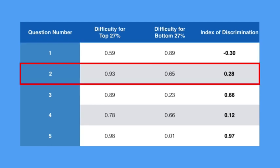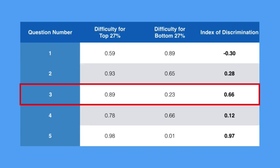Now, question two isn't bad. It's right against that bottom threshold we've set, so we might want to take a quick look at it to see if there are any improvements we can make. But let's just say that this was a mastery level question and I wanted everyone to do well on it. Question three is a great question as it's realistically able to tell top performers from bottom performers. I'm going to look at the topic of this question, how I wrote it, and use it to understand what my good students know that my lower ones don't — and also try to emulate the style of this question on others to improve all of my items.